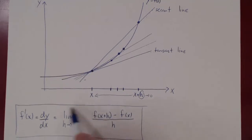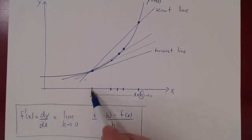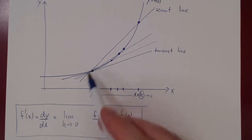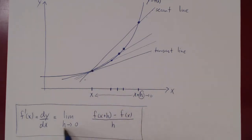So there you have it. If you want the slope of the tangent line at any given value of x, given the function, take the slope of the secant line and let h approach 0.